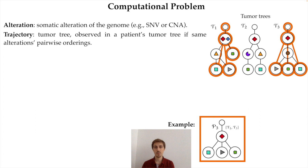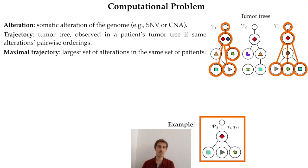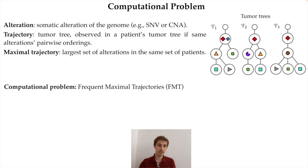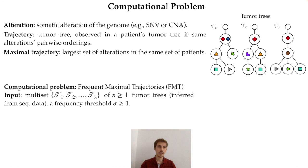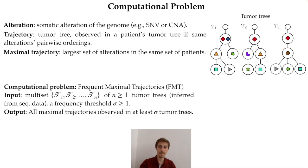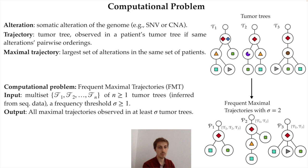This is another example of a trajectory observed only in the first and third tree. Furthermore, we only want to consider maximal trajectories — those with the largest set of alterations observed in the same set of tumors, making them as complete as possible. The formal computational problem is the frequent maximal trajectories problem: given a multi-set of n tumor trees inferred from sequencing data such as bulk or single-cell, and a frequency threshold sigma, the output is all maximal trajectories observed in at least sigma tumor trees. Here we show an example solution for sigma equal to 2.